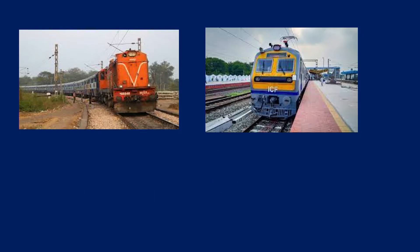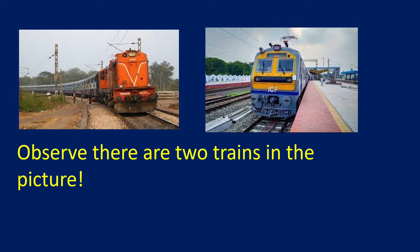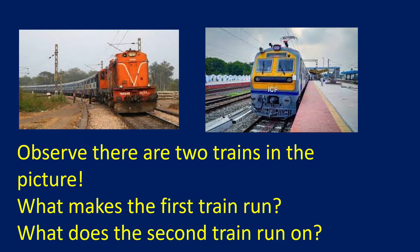Have you seen these two pictures? In the first picture, a train is moving. This train is running due to diesel — it is a diesel engine. In the second picture, the train is moving with the help of electricity. You can see a rod attached to the electric coils. The first train runs by diesel and the second train runs by electricity.